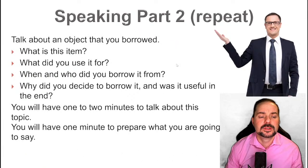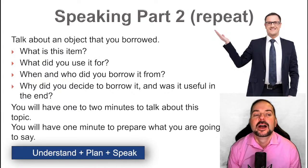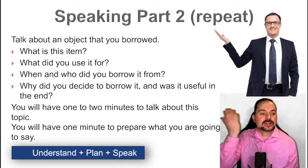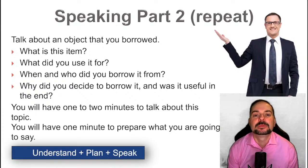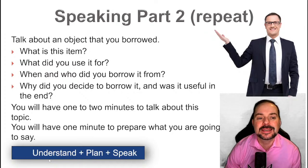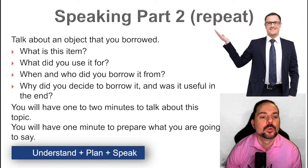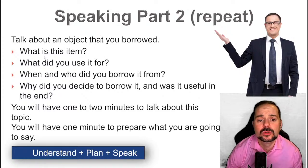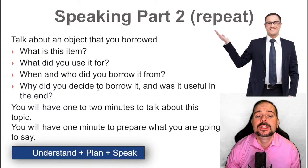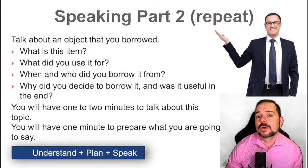So this is the cue card for the day — speaking Part 2. Our goal here is to understand, plan, and speak. We have to talk about an object that you borrowed from somebody. The questions on the card are: What is this item? What did you use it for? When and who did you borrow it from? Why did you decide to borrow it? And was it useful in the end? You have to answer all the questions on the cue card if you want to get a band 7, 8, or 9.